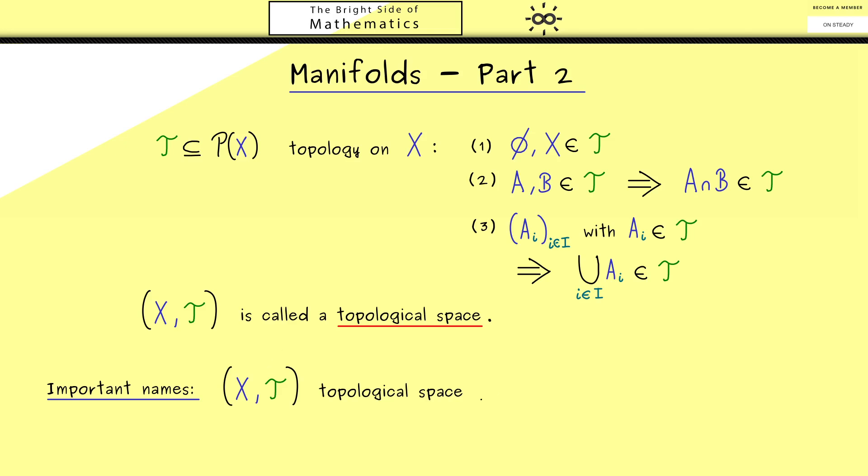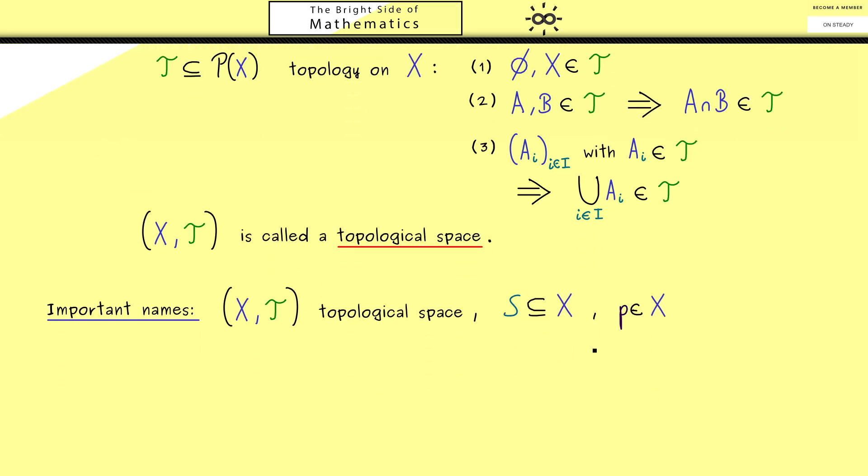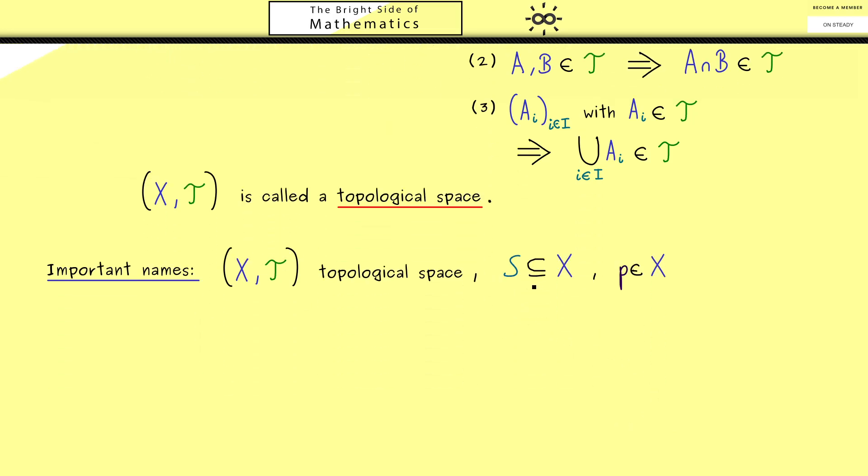Indeed, in a topological space, points in X can have special names. Therefore, here let's fix a topological space (X,T) and a subset S in X. Here please note S could be an element of the topology, but it does not have to be. We want to talk about names for points, so let's fix a point p in X.